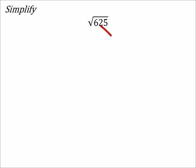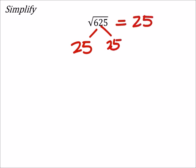We want one answer for this: what number multiplies by itself to equal 625? I want to say 25, so 25 would work — 25 squared is 625. Again, we don't want the negative for this one because it's the principal square root.